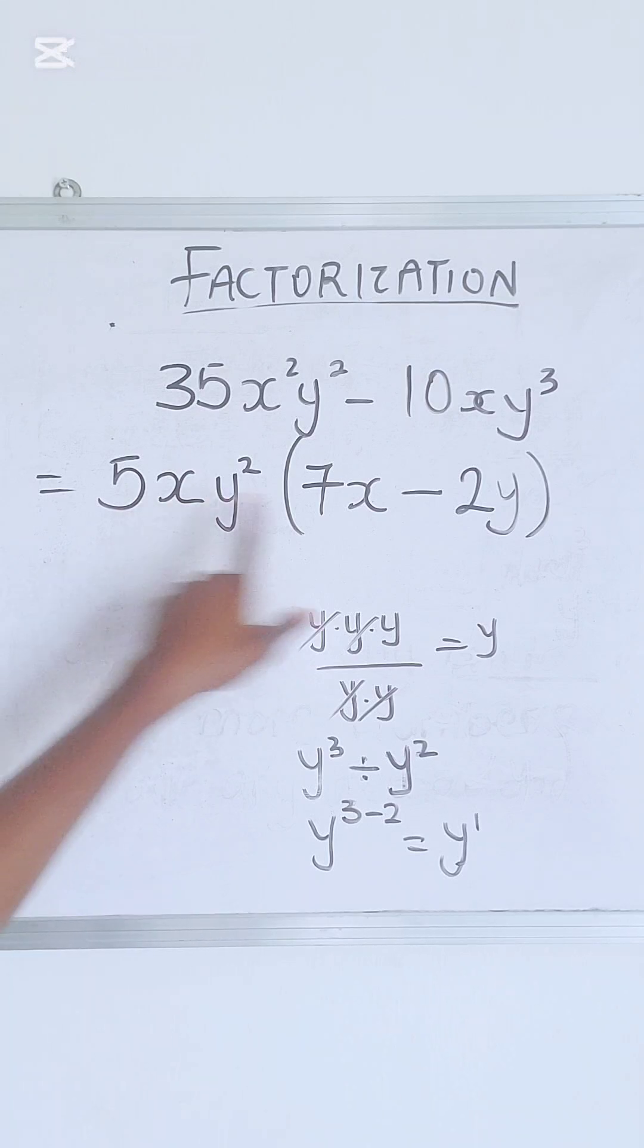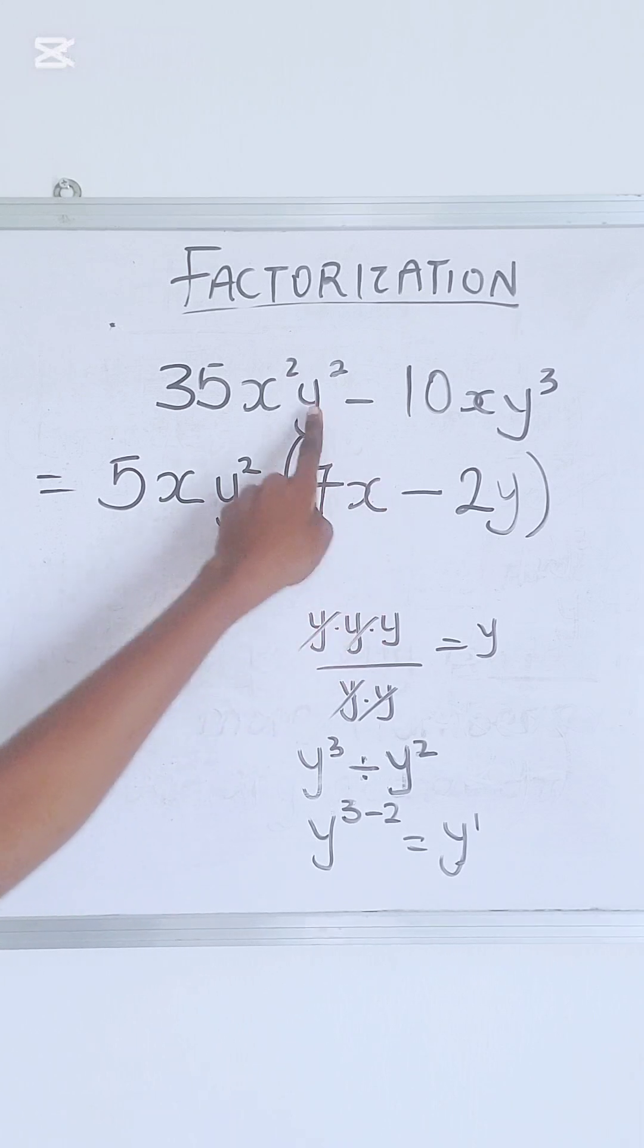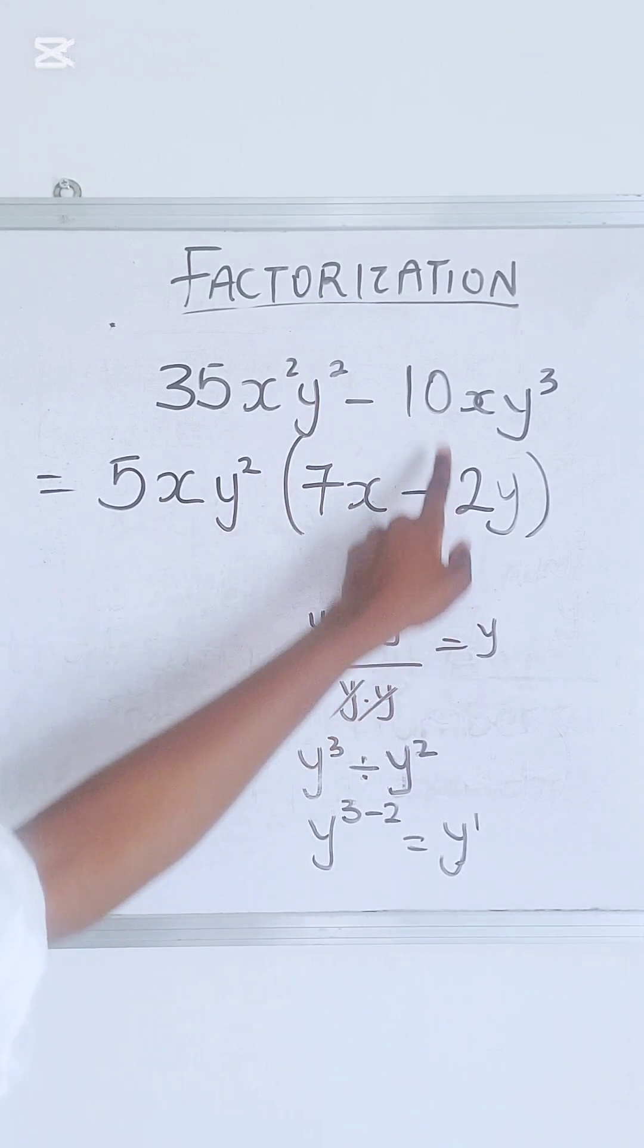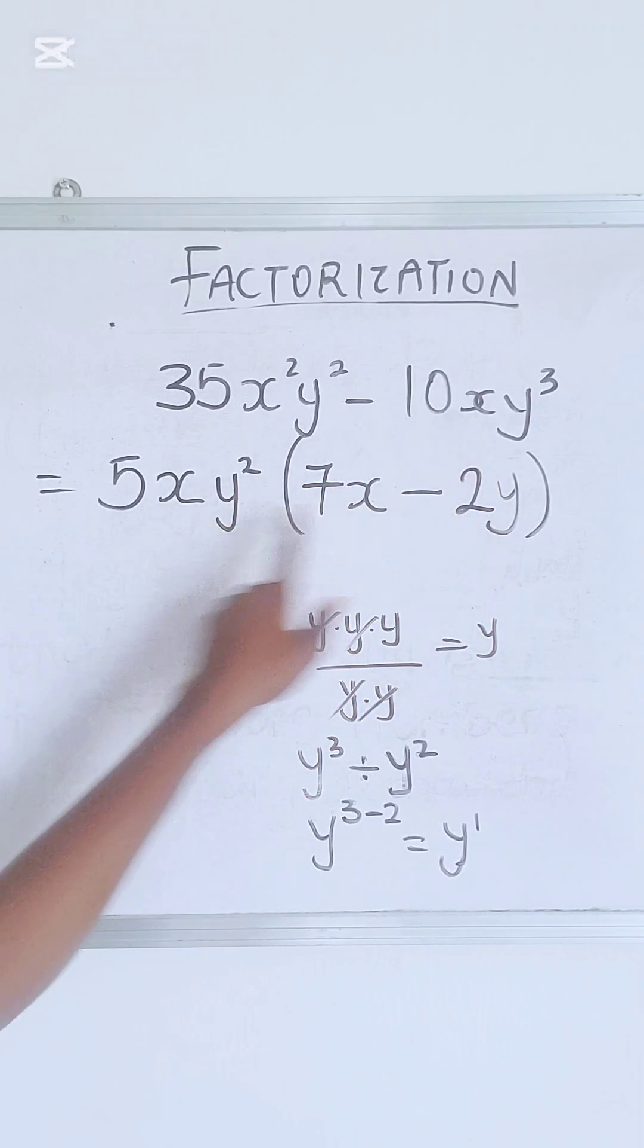5 times 7 is 35, x times x is x square, y square times 1 is y square. Moving on, minus 5 times 2 is 10, x times 1 is x, y square times y is y cube. Right, good.